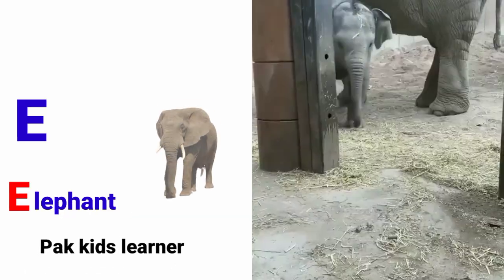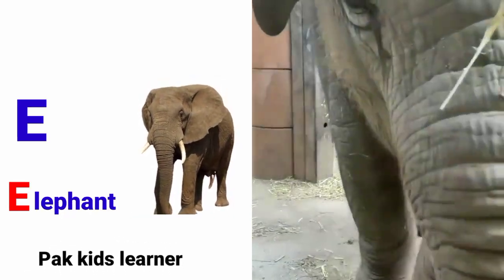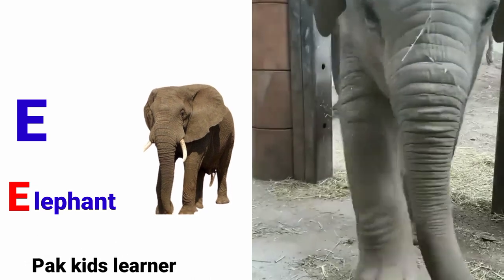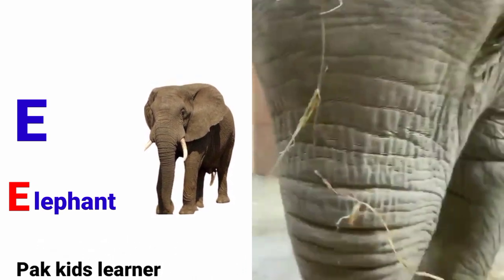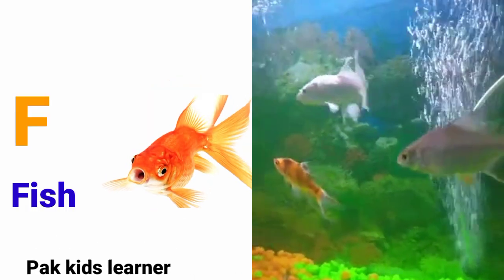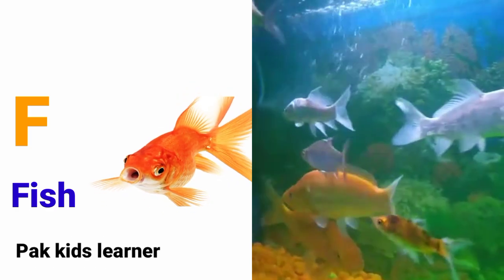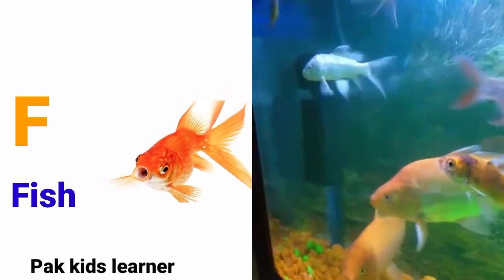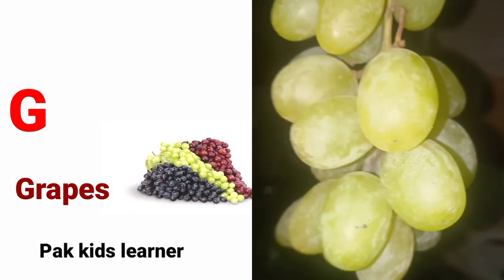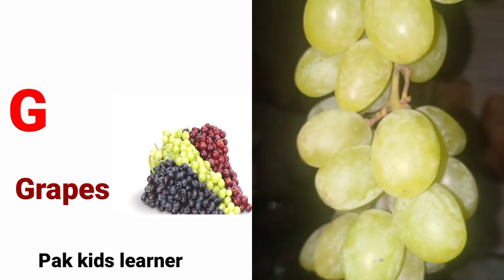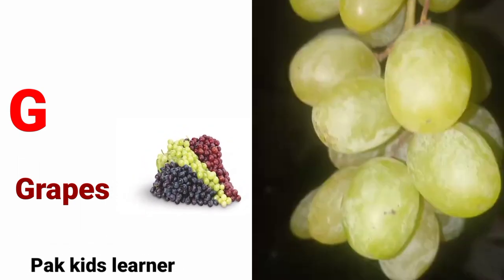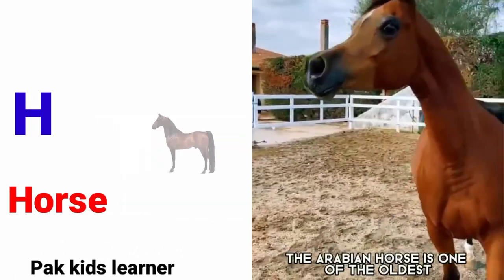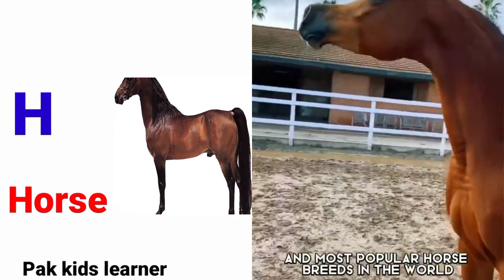E for Elephant. F for Fish. G for Grapes. H for Horse.